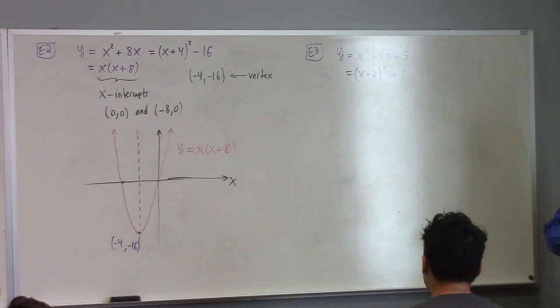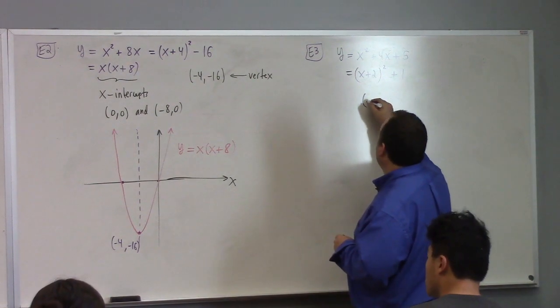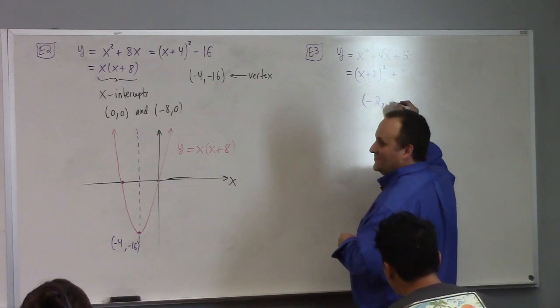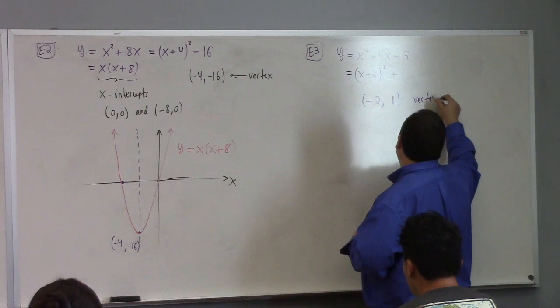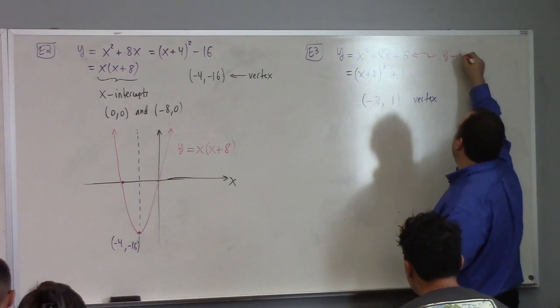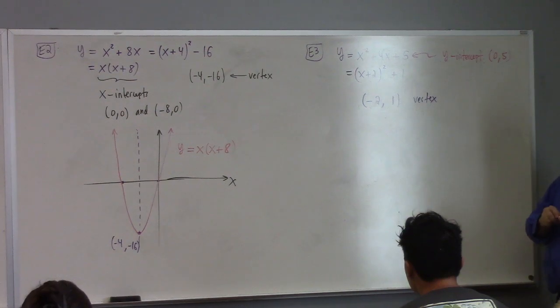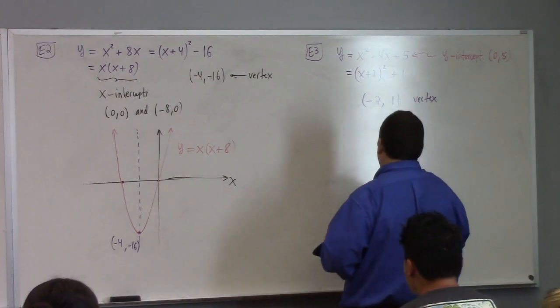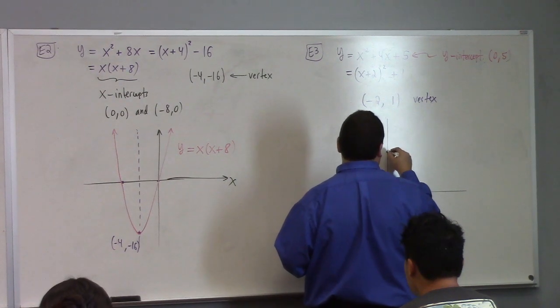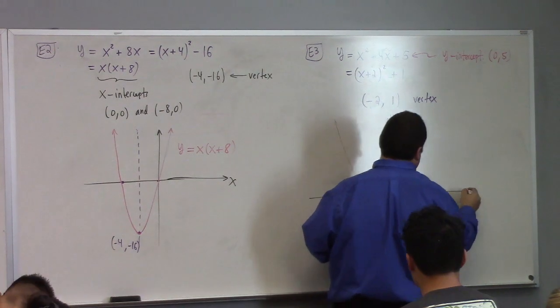What if we have y is equal to x squared plus 4x plus 5? Can we graph this? So this is x plus 2 squared plus 1 if we complete the square. I'm sorry I'm going kind of fast. I spent too long punching numbers in my calculator earlier. That's completing the square. Where's the vertex? Vertex at negative 2, 1. That's right. How about the y-intercept? Where's the y-intercept for this? Y-intercept is at 0, 5.